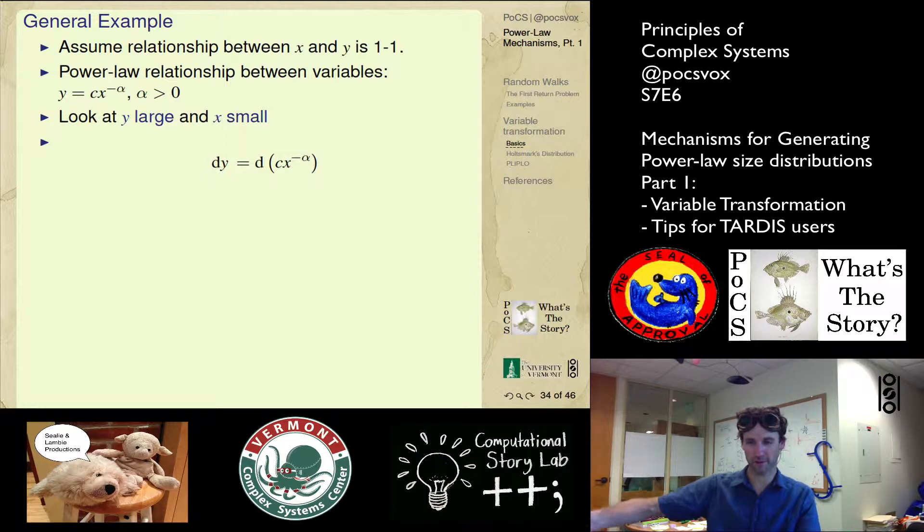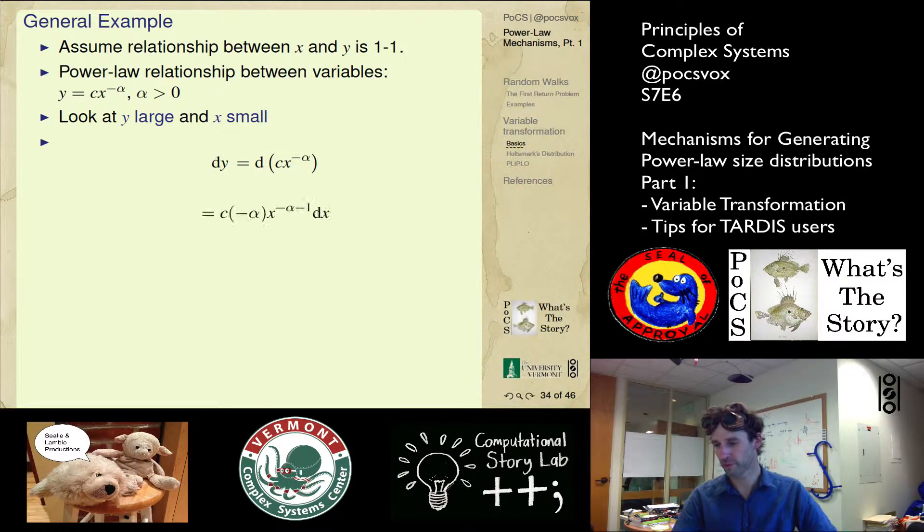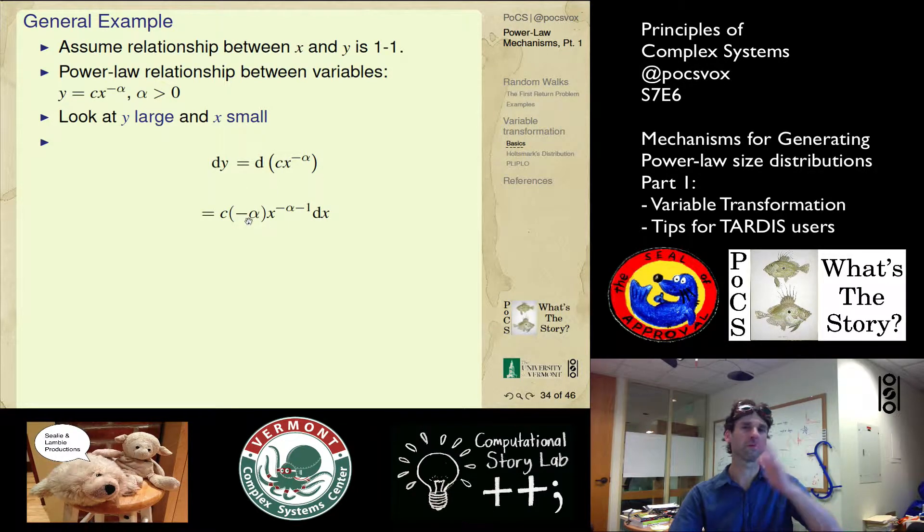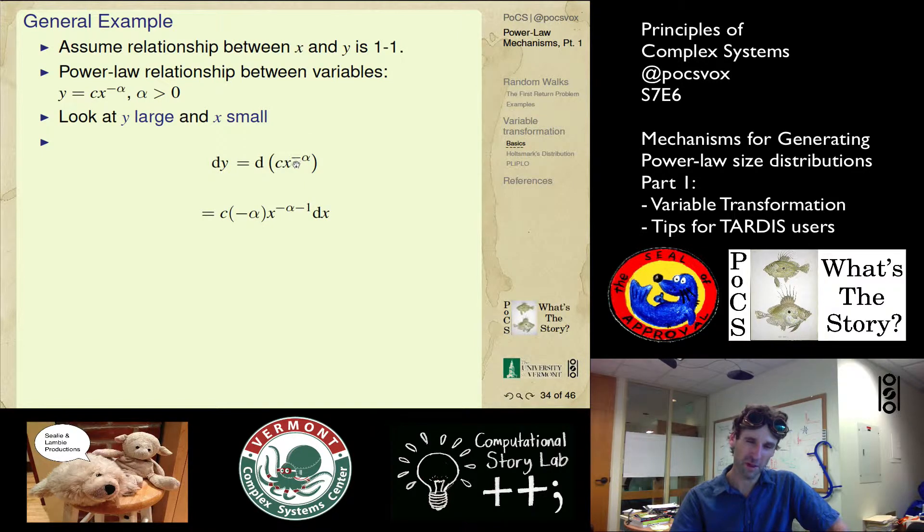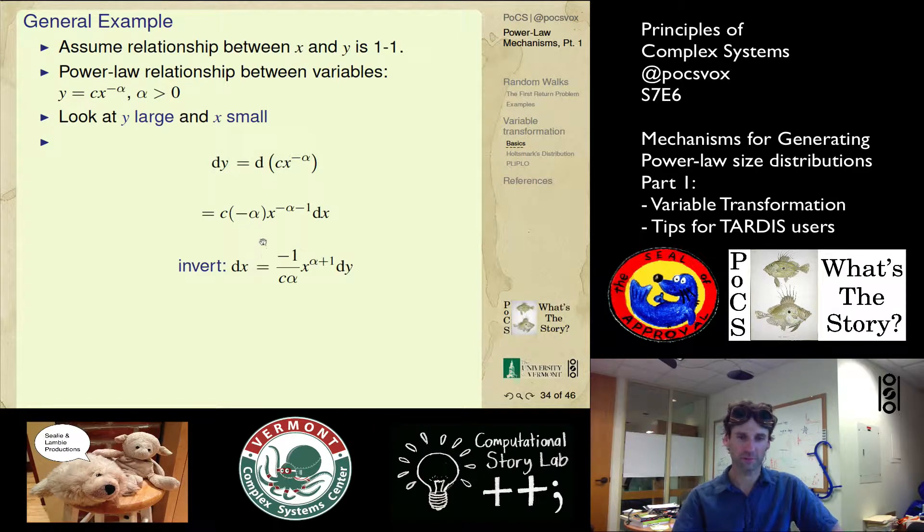We could have started with x as a function of y and found dx. We'll do it in this way. So dy is equal to d of whatever y is in terms of x. Here it's c x minus alpha. We just differentiate this. Minus alpha pops down here, x to the minus alpha minus one, and we get our dx sitting out. We're going to invert this to get our dx. So dx is the guy we're after. There'll be an x to the alpha plus one.